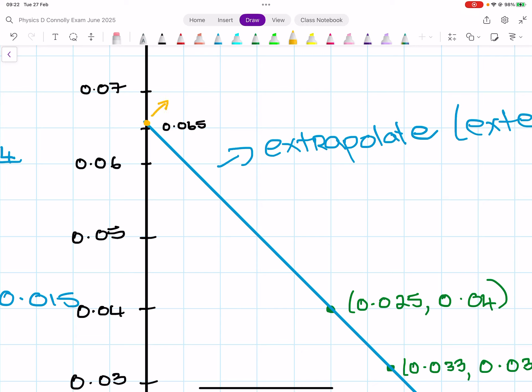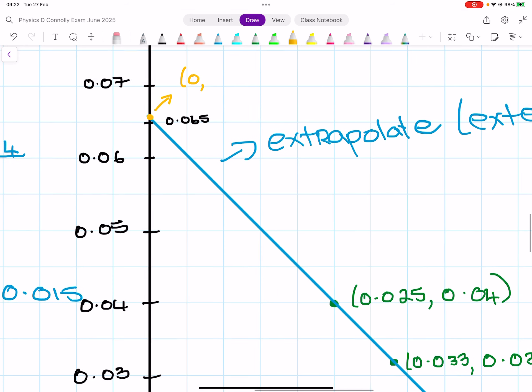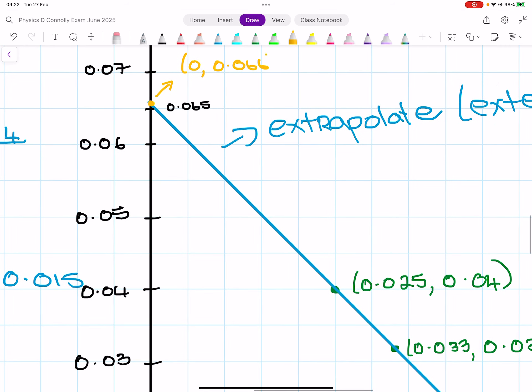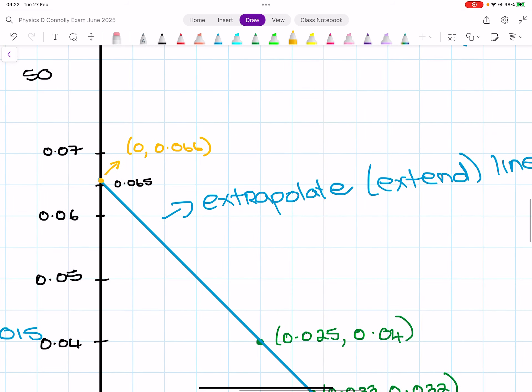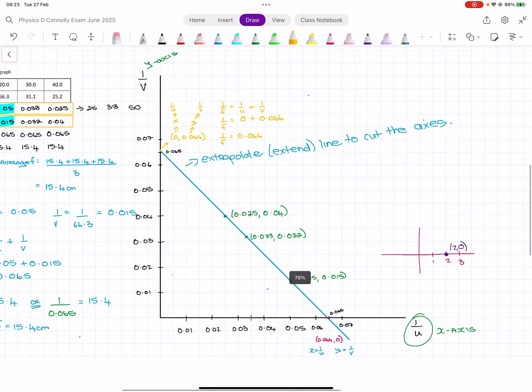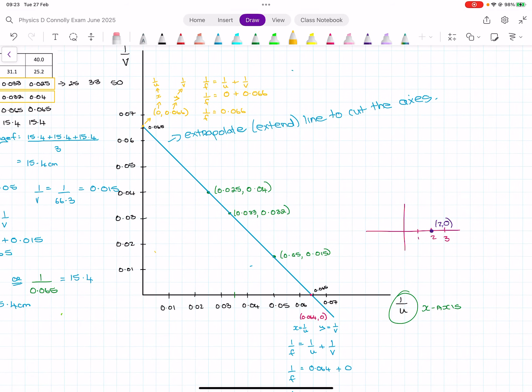So the coordinates of this point are (0, 0.066). And then we can apply the same logic. This is the x-coordinate which is 1 over u. This is the y-coordinate which is 1 over v. So we get 1 over f equals 1 over u plus 1 over v. Sub in our values, so it becomes 0 plus 0.066. So 1 over f equals 0.066.